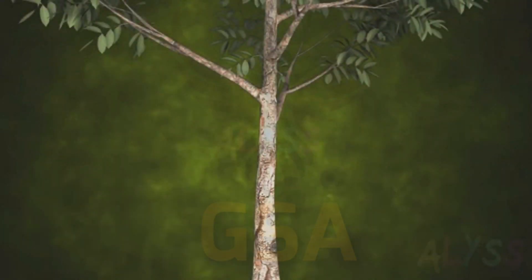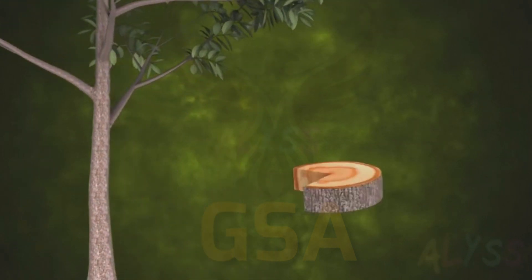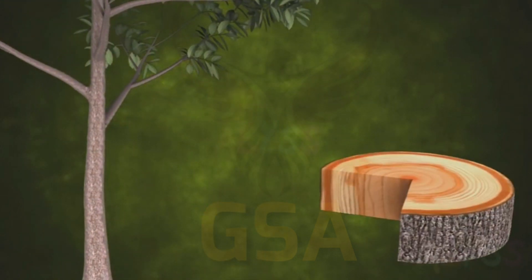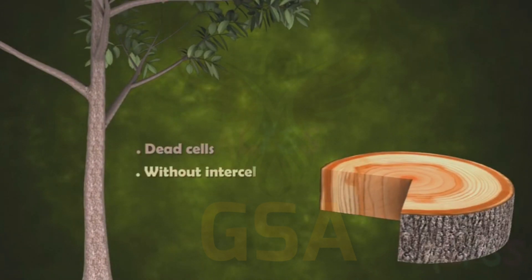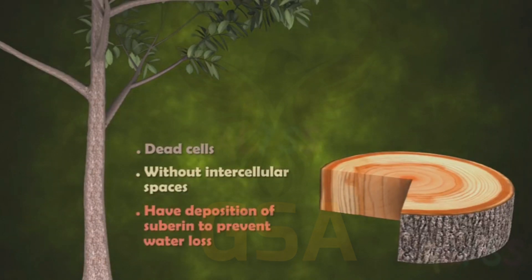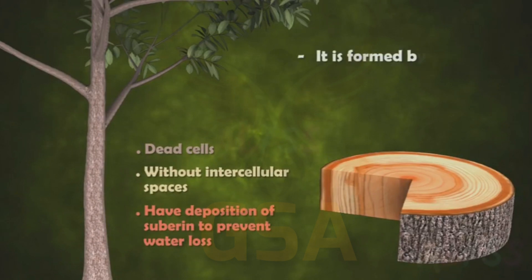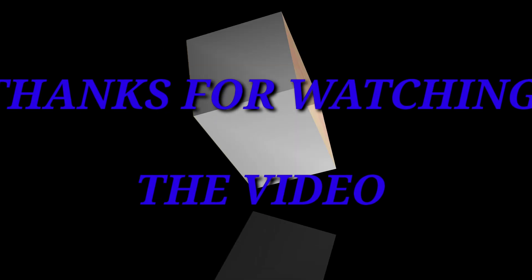In trees, as the stem grows older, the outer layer becomes compressed and dead, forming cork or bark of a tree. This is made up of dead cells without intercellular spaces and has deposition of suberin to prevent water loss. It is formed by secondary meristem and replaces the epidermis.